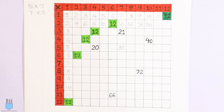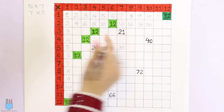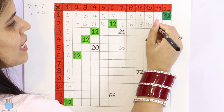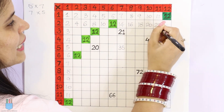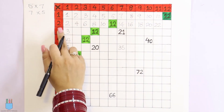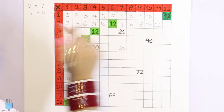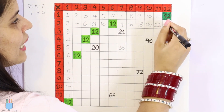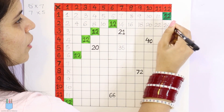Now here comes the problem. 2 into 11 — so 11 into 2 is going on, which is 22. Similarly, 12 into 2 is 24.